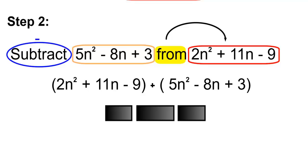Since we're subtracting, we'll write the additive inverse, so we'll add the opposite: negative 5n squared plus 8n and minus 3. Now we'll combine the like terms.